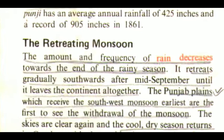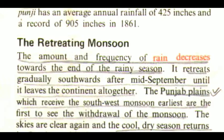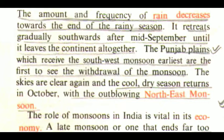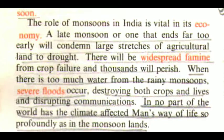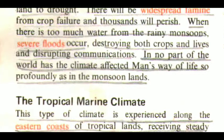The amount and frequency of rain decreases towards the end of the rainy season. It retreats gradually southwards after mid-September until it leaves the continent altogether. The Punjab plains, which received the southwest monsoon earliest, are the first to see the withdrawal of the monsoon. The skies are clear again and the cool, dry season returns in October with the outblowing northeast monsoon. The role of monsoons in India is vital to its economy. A late monsoon, or one that ends far too early, will condemn large stretches of agricultural land to drought. There will be widespread famine from crop failure and thousands will perish. When there is too much water from the rainy monsoons, severe floods occur, destroying both crops and lives and disrupting communications. In no part of the world has the climate affected man's way of life so profoundly as in the monsoon lands.